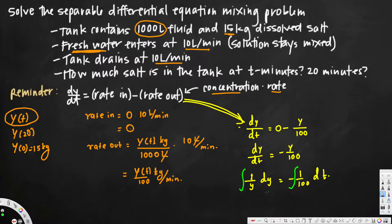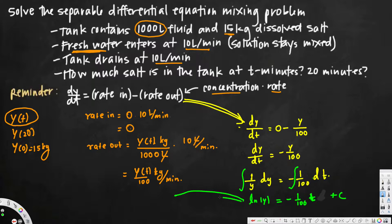Integrating both sides: the left side gives ln|y|, and the right side gives negative 1/100 · t, plus a constant C.